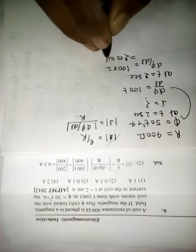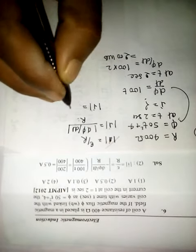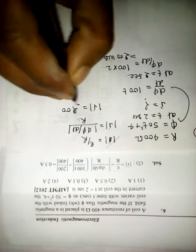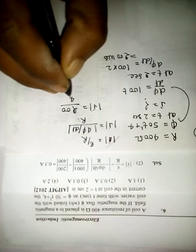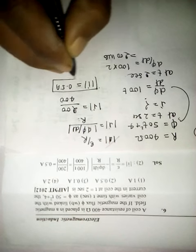At t equals 2 seconds, d phi over dt, which means the rate of change of magnetic flux, will be 100 times 2, which equals 200 Weber. So the induced current will be 200 divided by 400, which is 0.5 ampere.